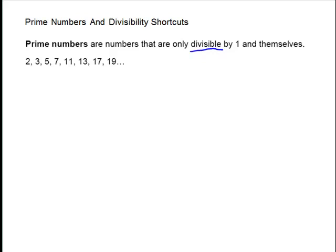Prime numbers and divisibility shortcuts. Prime numbers are numbers that are only divisible by 1 and themselves. That means they divide evenly with no remainder.